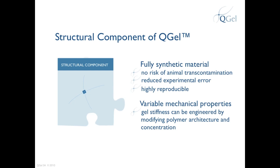Because Q-Gel is fully synthetic, there is no risk of animal transcontamination. Batches are made according to strict pharmaceutical standards to ensure product reproducibility, and as a result, experimental error can be reduced dramatically. Q-Gel can be either lightly cross-linked to make a soft gel or heavily cross-linked to make a stiffer, harder gel, giving you an additional control variable for your investigations.